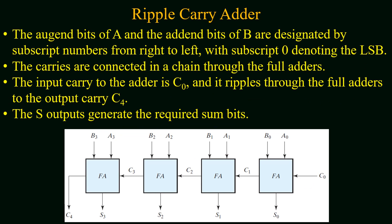Looking at the circuit, two numbers A and B are added. The augend bits of A and the addend bits of B are designated by subscript numbers starting from zero, with labeling going from right to left, where the zero subscript represents the least significant bit.